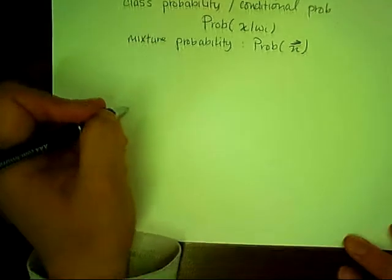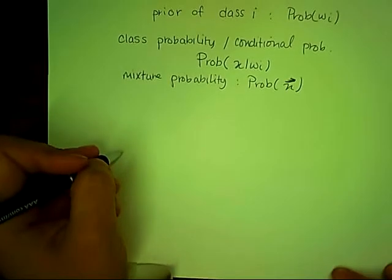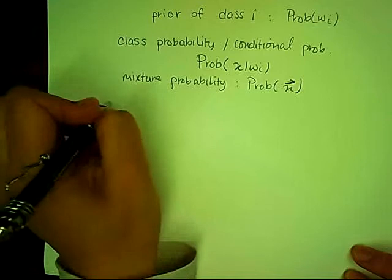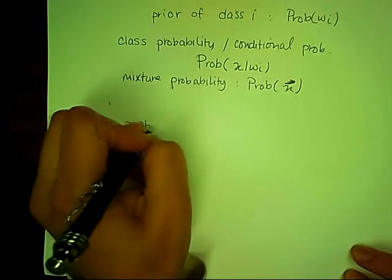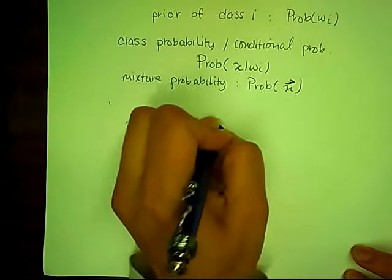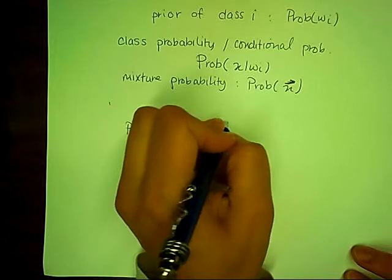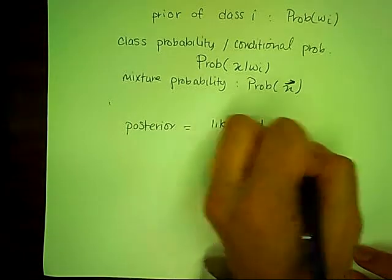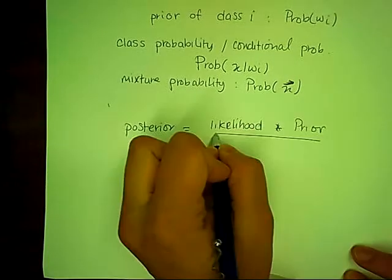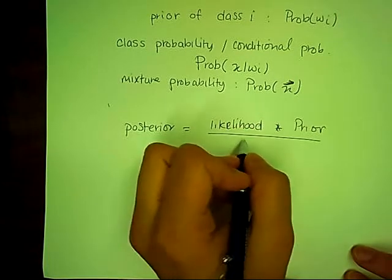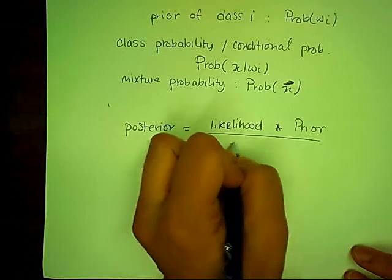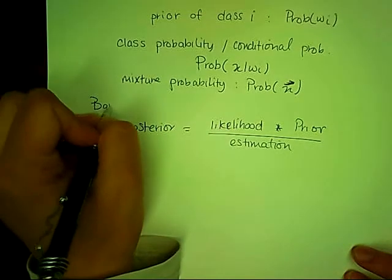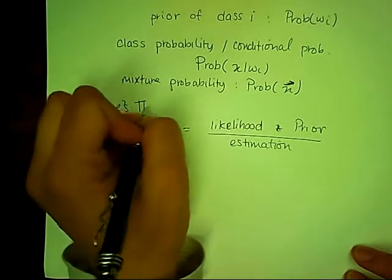We derive Bayes' rule through Bayes' theorem. The definition of Bayes' theorem is: the posterior probability equals the likelihood times the prior over the evidence. This is Bayes' theorem.